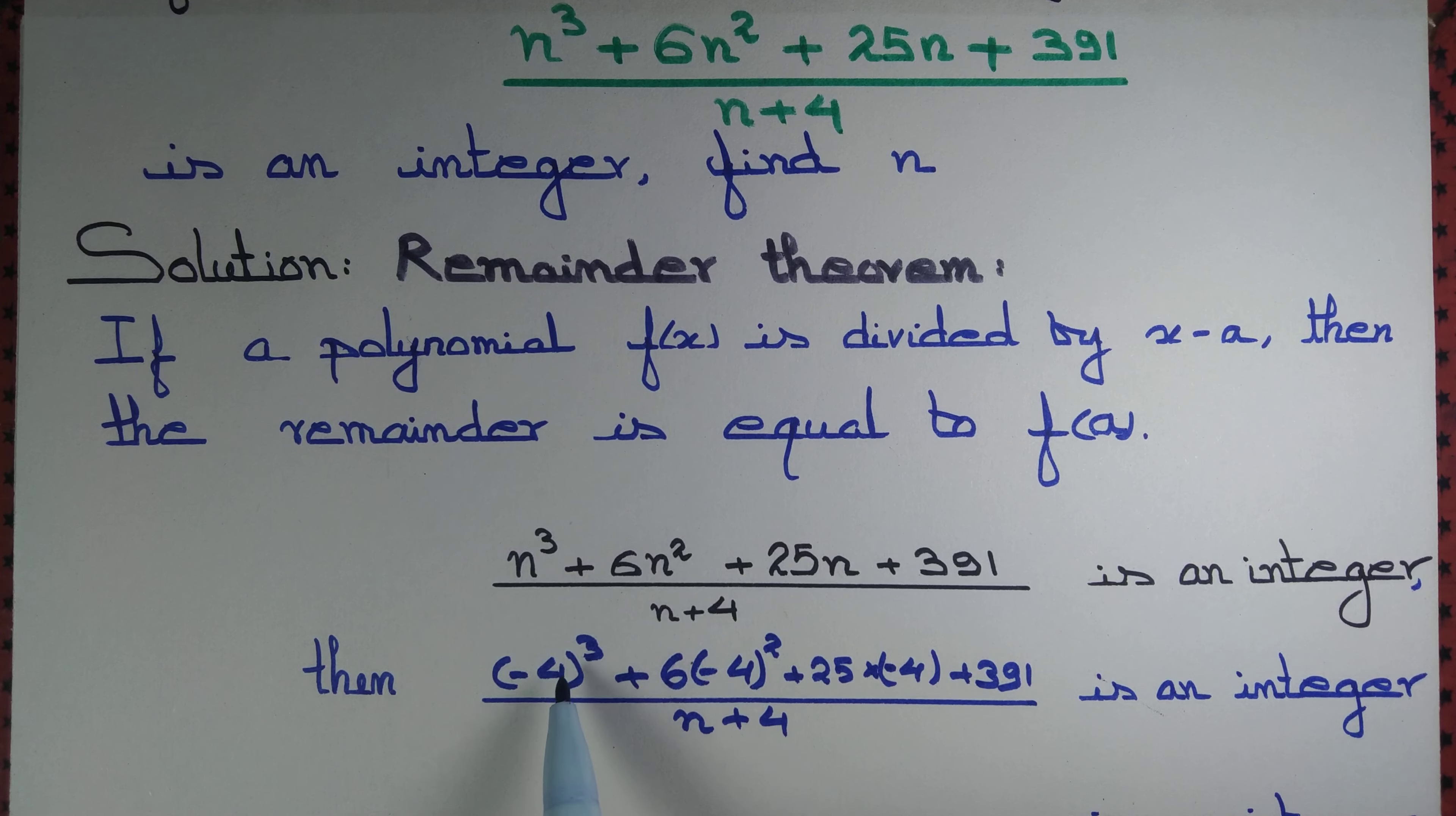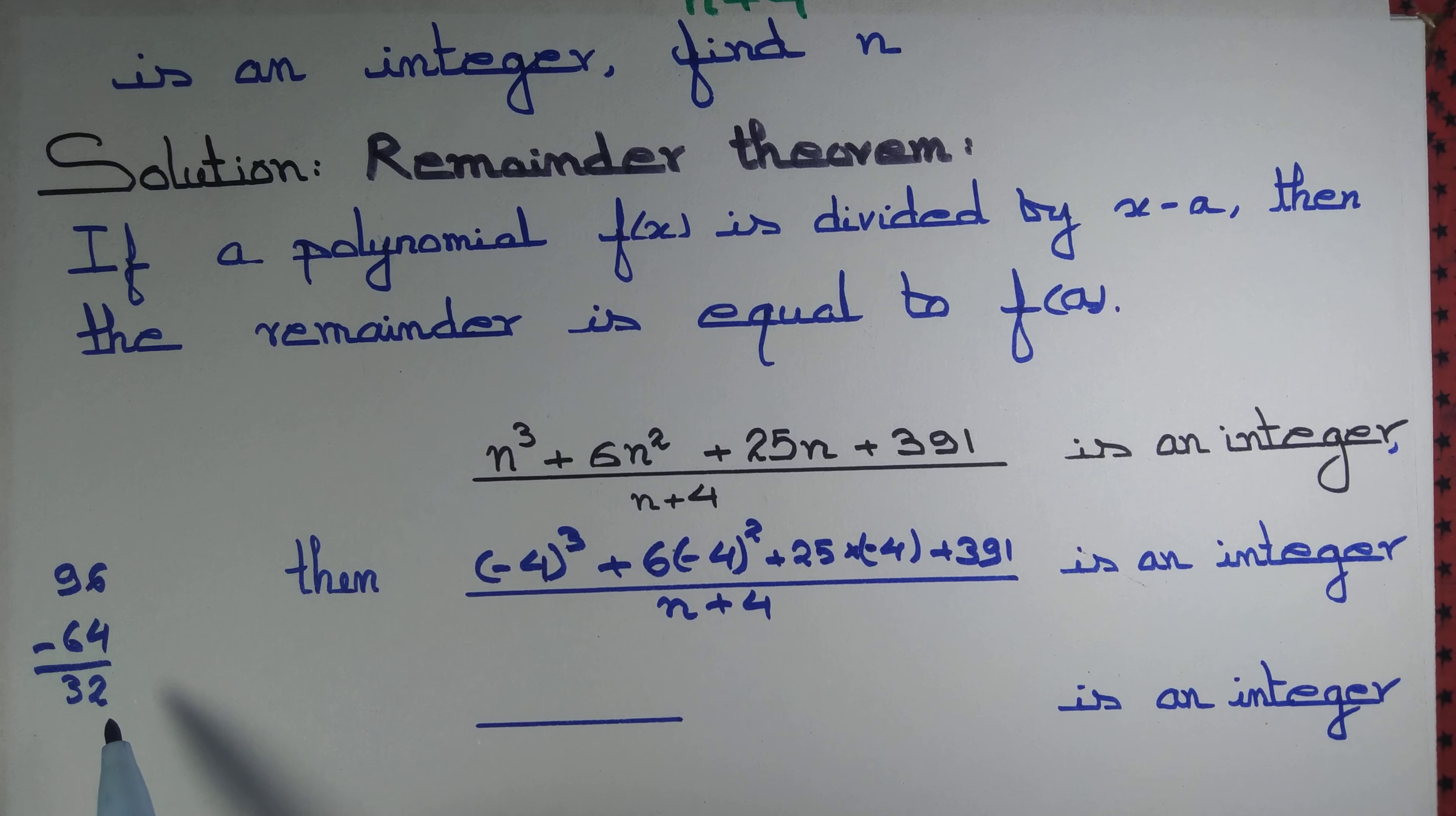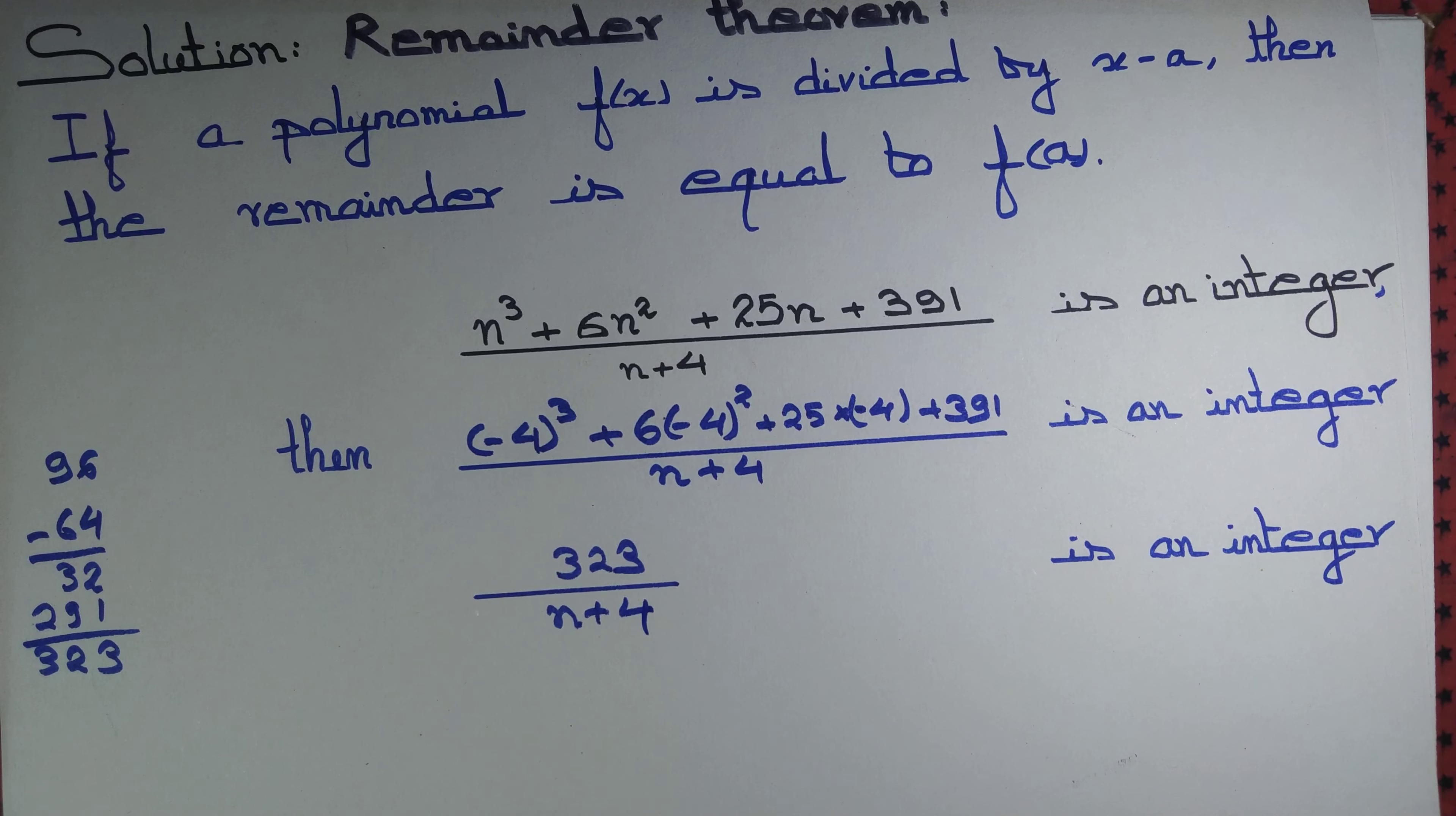Now let's simplify the expression. Minus 4 cubed is minus 64, and 4 squared is 16. 16 into 6 is 96. If we subtract 64 from 96 we get 32, and 25 into 4 is 100. 391 minus 100 is 291. If we add 291 with 32 we get 323. So 323 divided by n plus 4 must be an integer.